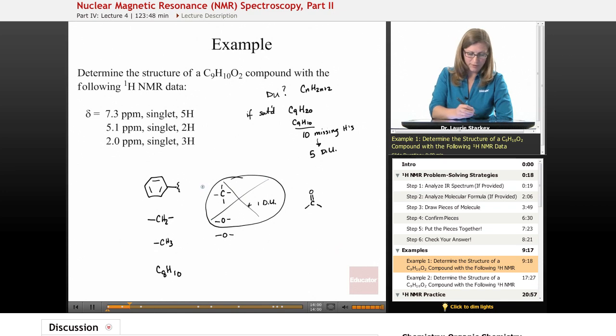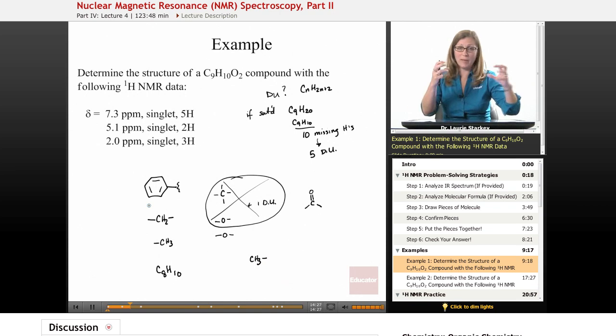These now are our pieces. We have a phenyl ring, CH2, CH3, carbonyl, and an oxygen. Now we're ready to put them together. We start with an end piece and decide what it's attached to. Let's start with our CH3. What are our choices? Could we attach it to the benzene ring? We can't because that's an end piece. If we attached a methyl and a benzene, we would have toluene, our structure would be done. We could attach it to a CH2 or an oxygen or a carbonyl.